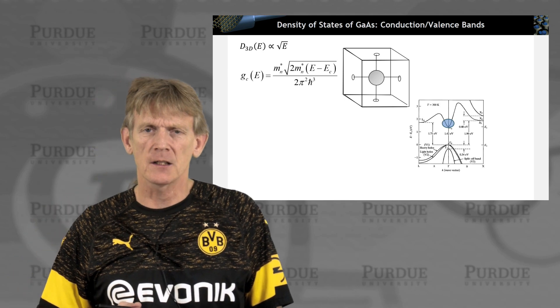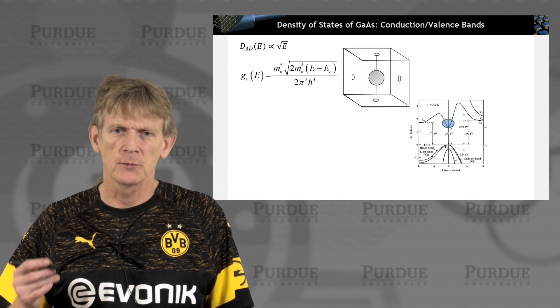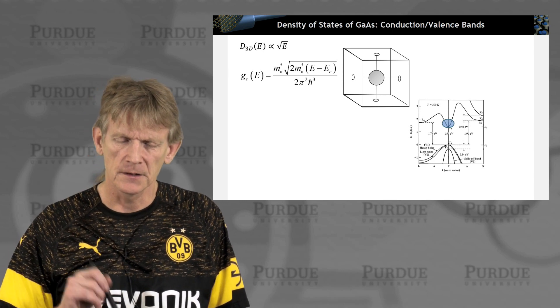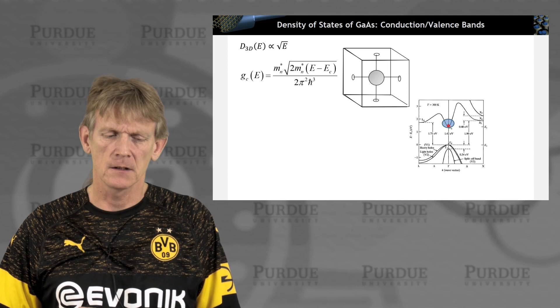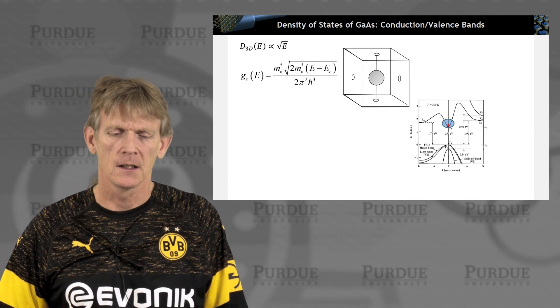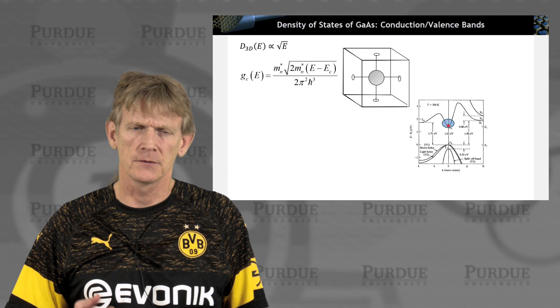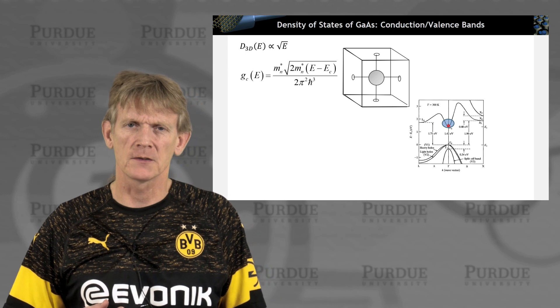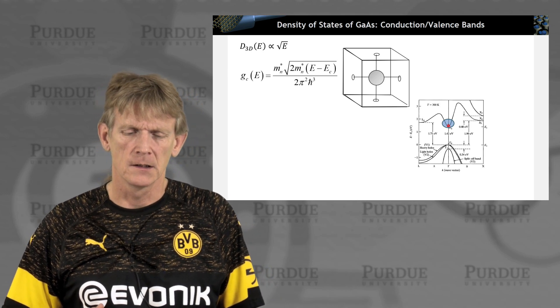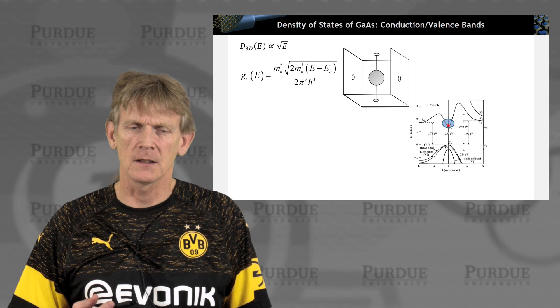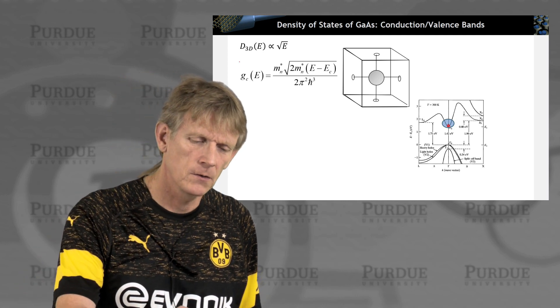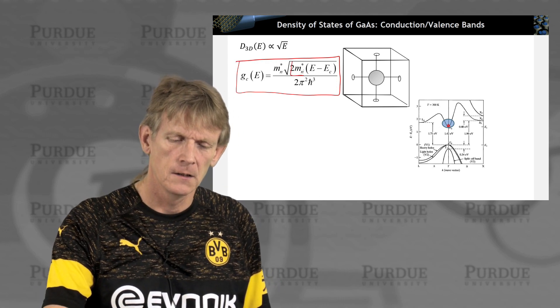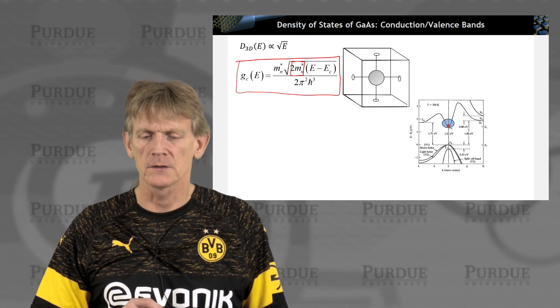So let's start from the nice material, the gallium arsenide. At the gamma point, as indicated here, it has a very close to ideal spherical density of states isosurface. That means there's a single effective mass in all three directions of the crystal that are governing the isosurfaces and the density of states. So we can calculate a density of states in 3D with a single effective mass for gallium arsenide like this.